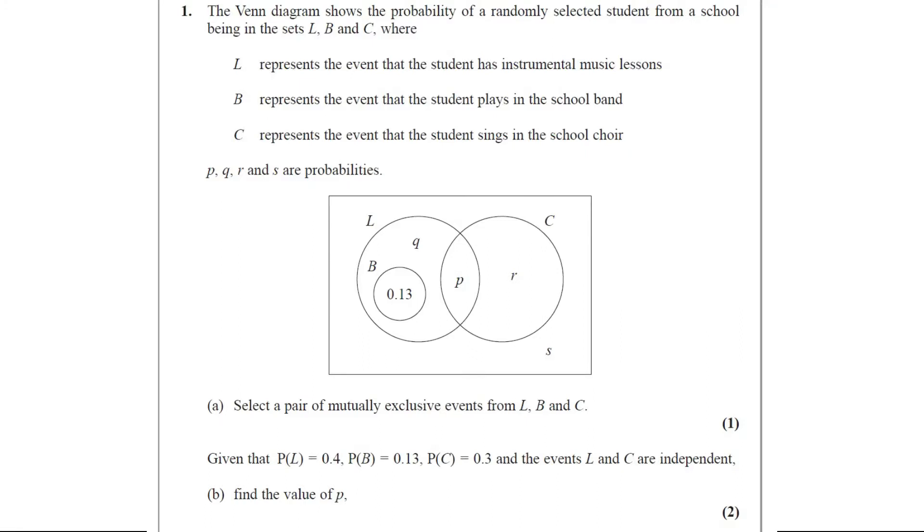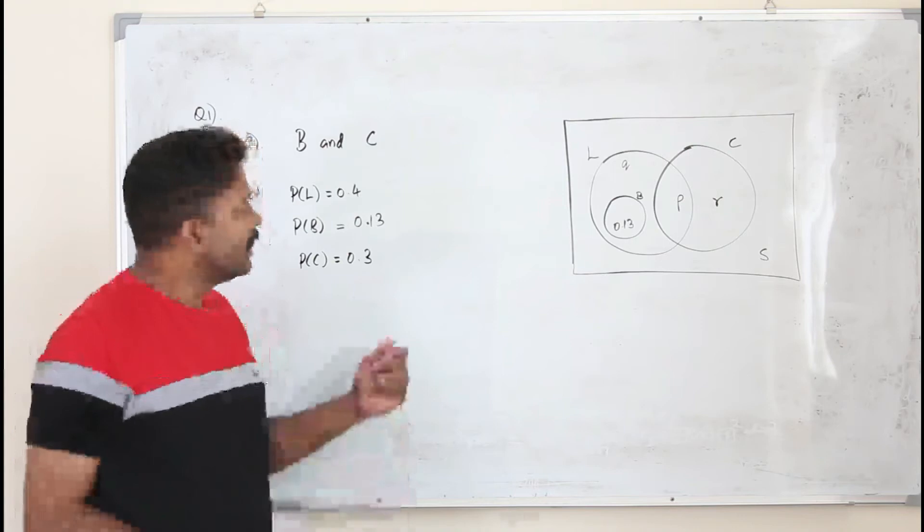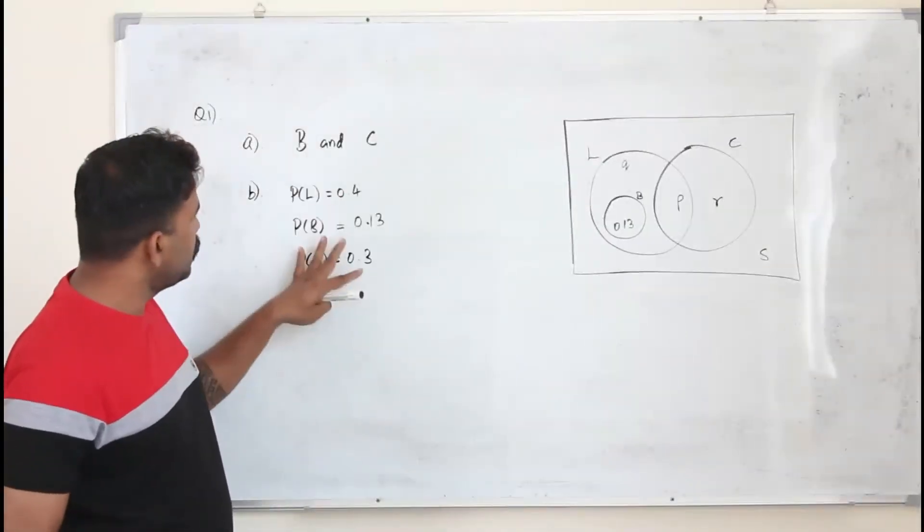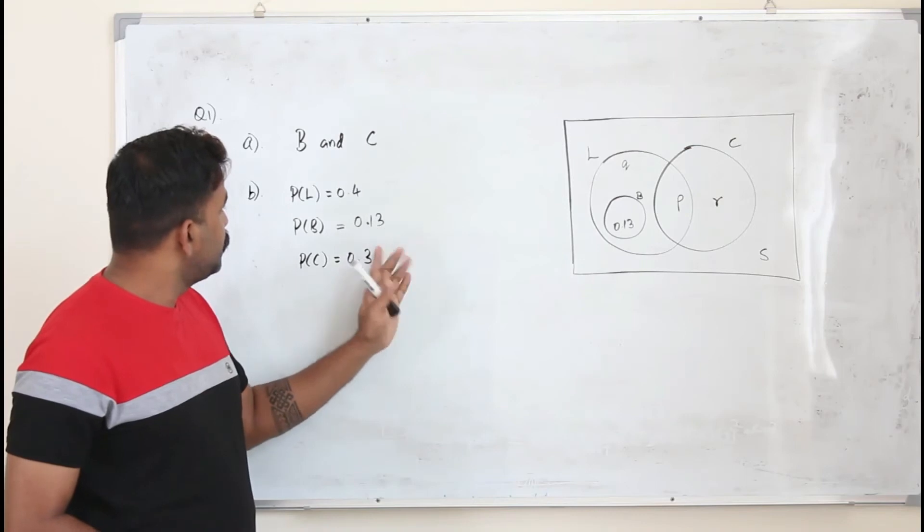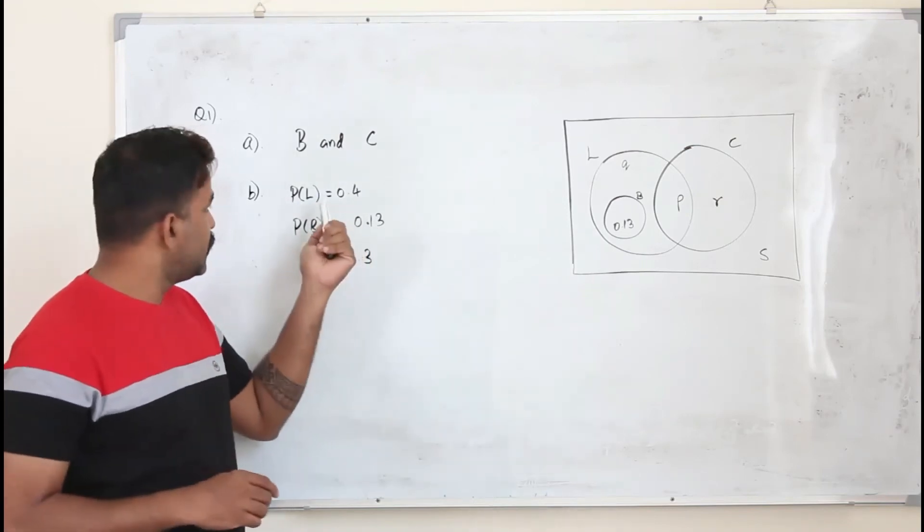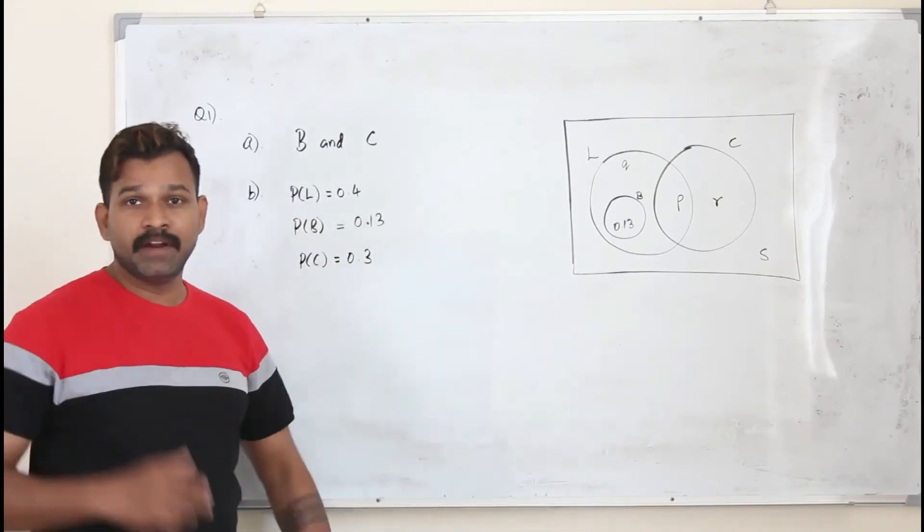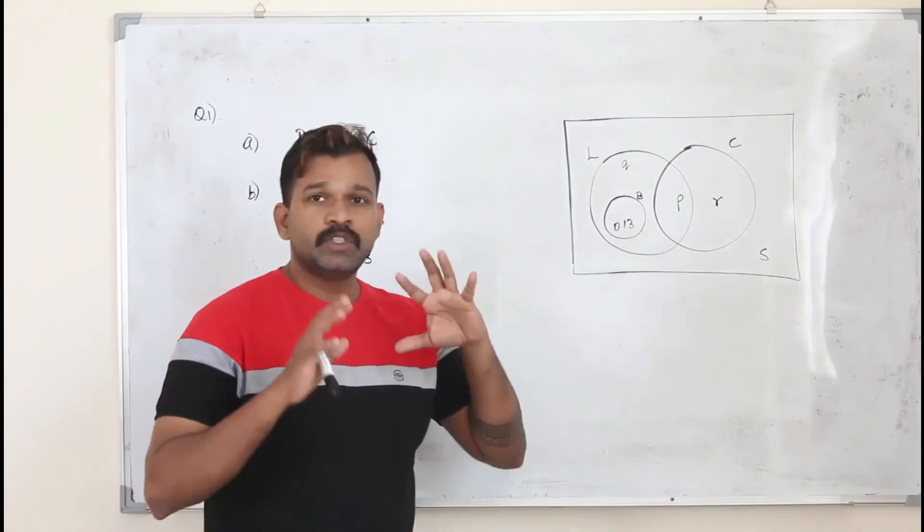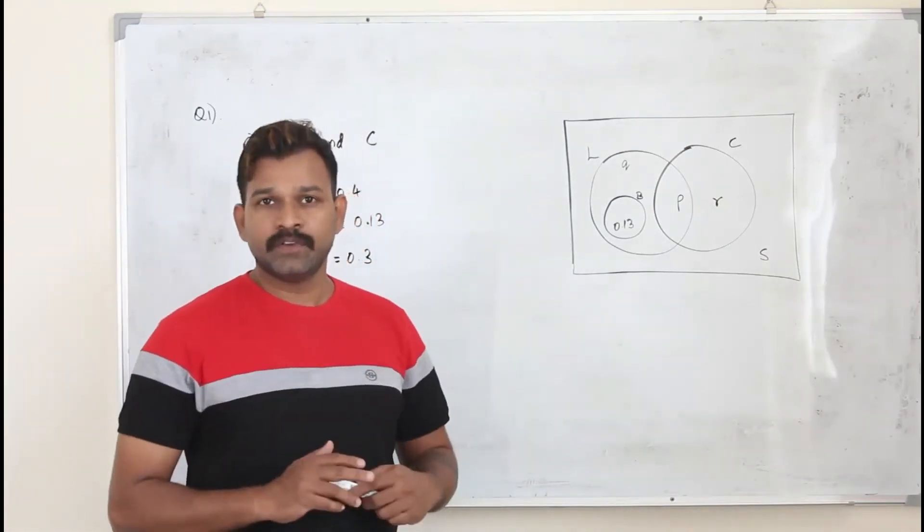Given that P of L is 0.4, P of B is 0.13, P of C is 0.3, and the events L and C are independent. Here in part B, we have all this information, and in addition to this, events L and C are independent events. So there are two formulas, two rules you need to remember here.